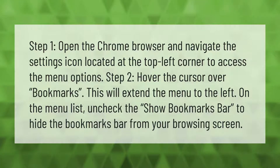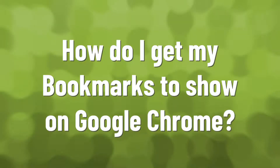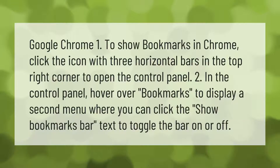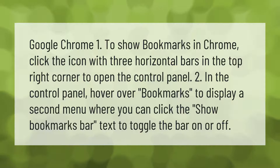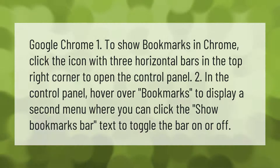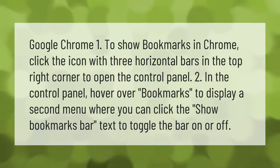Google Chrome: 1. To show bookmarks in Chrome, click the icon with three horizontal bars in the top right corner to open the control panel. 2. In the control panel, hover over Bookmarks to display a second menu where you can click 'Show bookmarks bar.' Click the 'Show bookmarks bar' text to toggle the bar on or off.